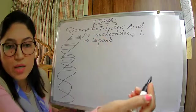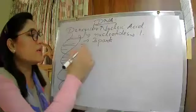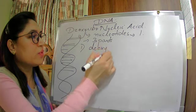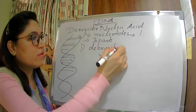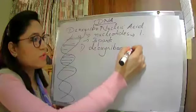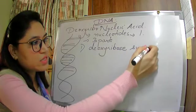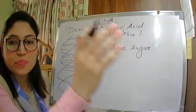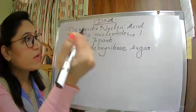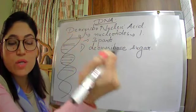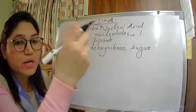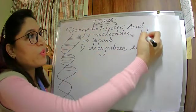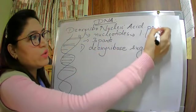Which are the three parts of the nucleotide? It has deoxyribose sugar. We are not going into the details of the structure, but you should know what DNA is and what it is made up of. DNA is made up of repeated nucleotide units, so we also call it a polynucleotide molecule.